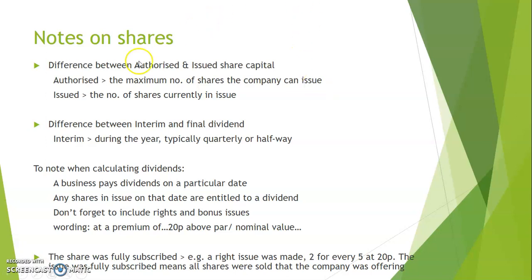Issued share capital is the number of shares that are already in issue at the moment. You'll have one of two scenarios: scenario one is they have authorized shares of a million but have only issued some of those; scenario two is they have authorized shares of a million and have issued all of them - the full million. Authorized is the maximum they can issue, and issued is how many they have actually sold already.